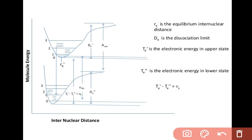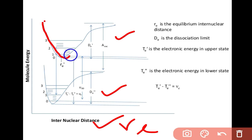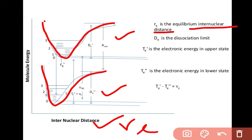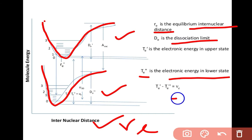This is a graph between internuclear distance r_e and molecular energy. The lower curve is the ground level and the upper curve is the excited level — this is the potential energy curve. Here r_e is the equilibrium internuclear distance and D_e is the dissociation limit. T_e' is the electronic energy in the upper state and T_e'' is the electronic energy in the lower state, so we can write T_e' minus T_e'' equals V_e.